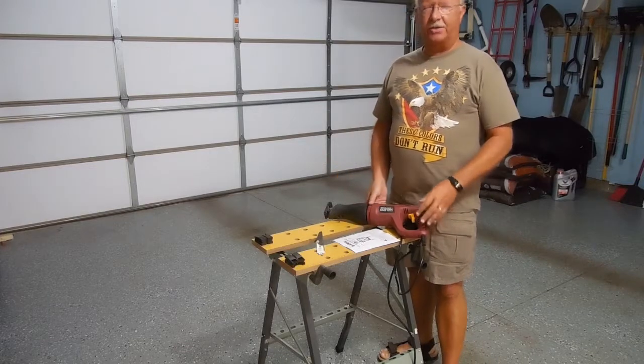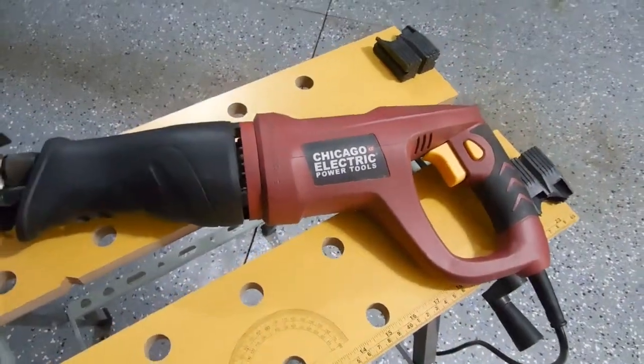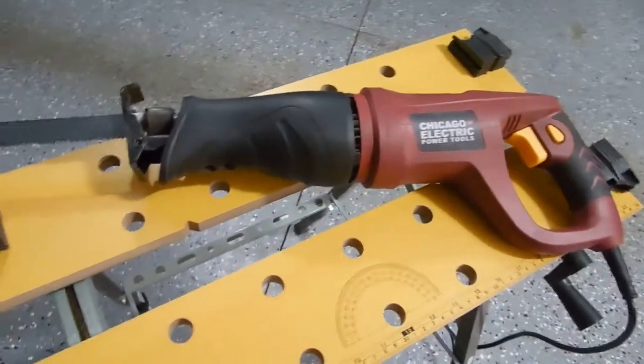Today this is a dual evaluation. The main one is on this Chicago Electric Power Tool Company's reciprocating saw available at Harbor Freight.